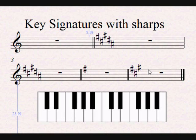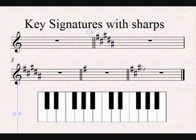And lastly, if the last sharp is affecting the G — G sharp — just move one step to the right, and we find that this particular tune is written in A major, or the relative minor of A major — 1, 2, 3, 4 — F sharp minor.